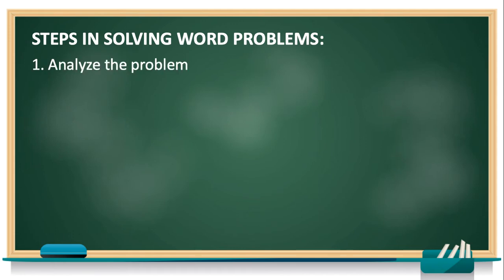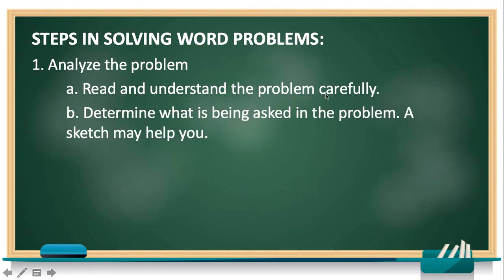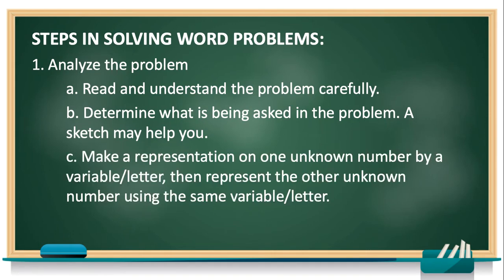One, we need to analyze the problem by reading and understanding the problem carefully. And you need to identify what is asked in the problem. Sketching or drawing the problem will help you, and I will show you later how it is done. Then make a representation of one unknown number by a variable or letter, then represent the other unknown using the same variable or letter.